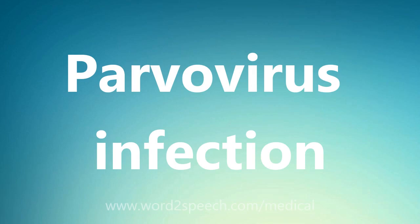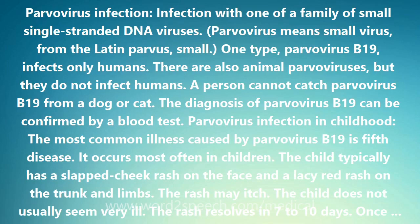Parvovirus Infection is caused by one of a family of small single-stranded DNA viruses. Parvovirus means small virus, from the Latin parvus, meaning small. One type, Parvovirus B19, infects only humans. There are also animal parvoviruses, but they do not infect humans.